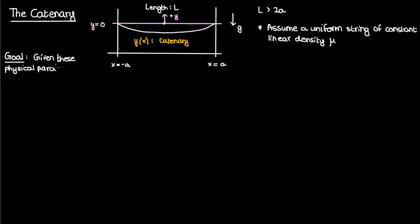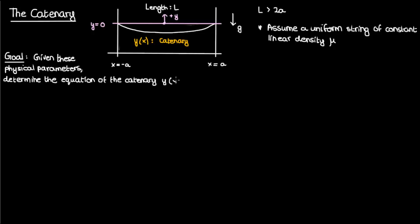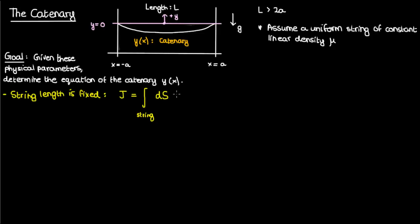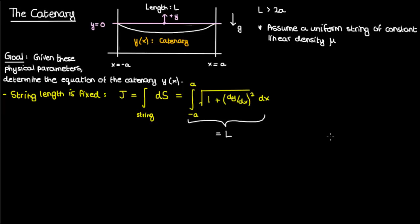The goal of this problem is to determine the equation of this catenary given these physical parameters. One fact that's pretty obvious is that the length of the string is a fixed value. We can calculate the length of the string by integrating the element of arc length ds over the entire string, and I'll call this integral J. This arc length integral can be written as the integral from negative a to a of the square root of 1 plus dy by dx squared dx. We know this integral equals the fixed constant L, the length of the string. So this is the integral representing our constraint.